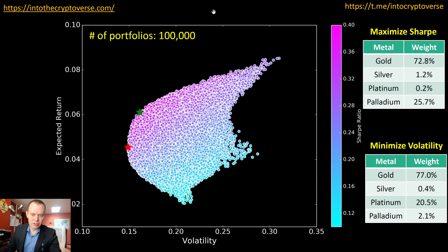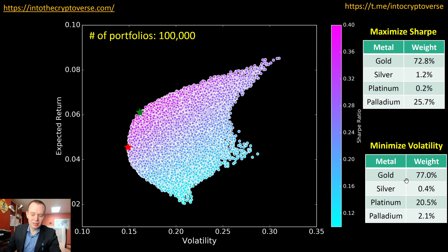The largest number of cases I ran before switching to quadratic programming was 100,000 portfolios, and you can see the weights aren't changing as much now. To maximize the Sharpe ratio, it ended up being around 73% gold and 26% palladium, with small portions of silver and platinum. To minimize volatility, it was mainly 77% gold and 21% platinum, with a little silver and palladium mixed in.